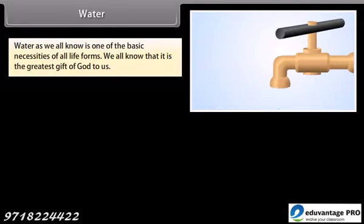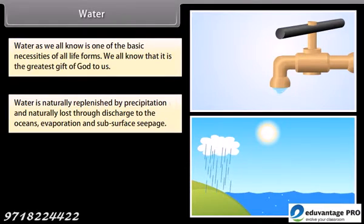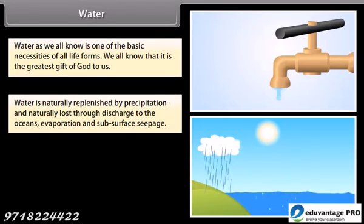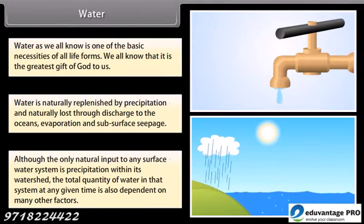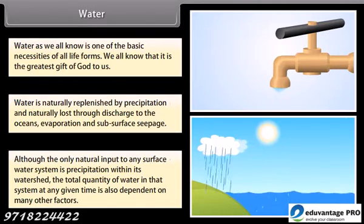Water, as we all know, is one of the basic necessities of all life forms and is the greatest gift of nature to us. Water is naturally replenished by precipitation and naturally lost through discharge to the oceans, evaporation and subsurface seepage. Although the only natural input to any surface water system is precipitation within its watershed, the total quantity of water in that system at any given time is also dependent on many other factors.